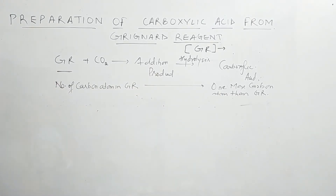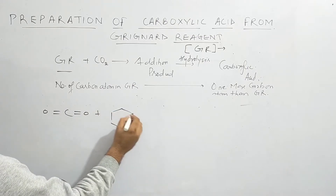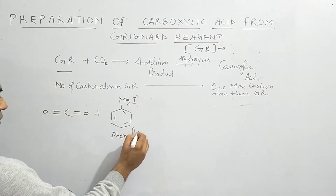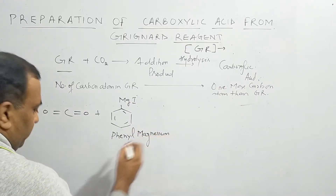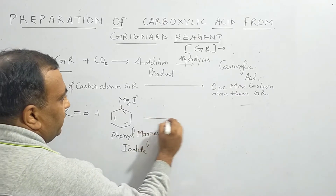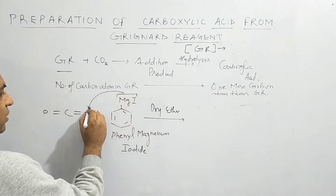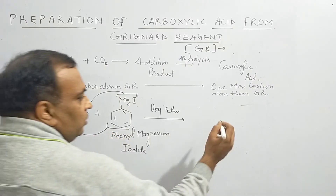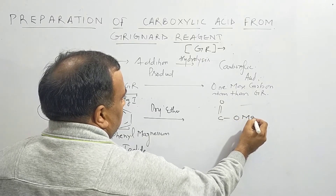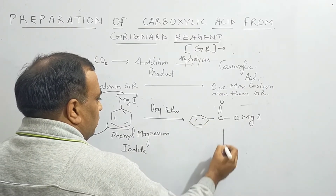In the second example, carbon dioxide is made to react with phenyl magnesium iodide (PhMgI) in the presence of dry ether. The MgI group adds onto the oxygen of CO₂, and the phenyl group adds onto the carbon. This gives an addition product with C and OMgI attached to the phenyl group.